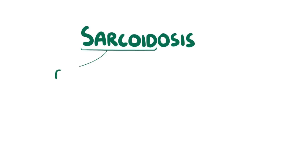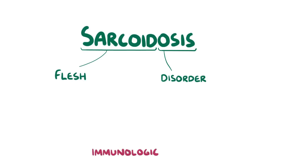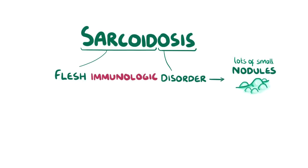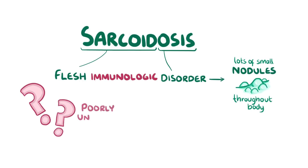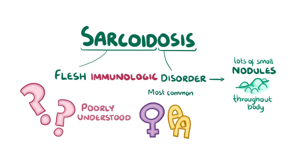With sarcoidosis, 'sarcoid' refers to the flesh, and 'osis' means disorder. The reason we call it that is that sarcoidosis is an immunologic disorder that results in lots of small nodules forming throughout the body. The disease is actually poorly understood, but we know that it's most common among African American females.